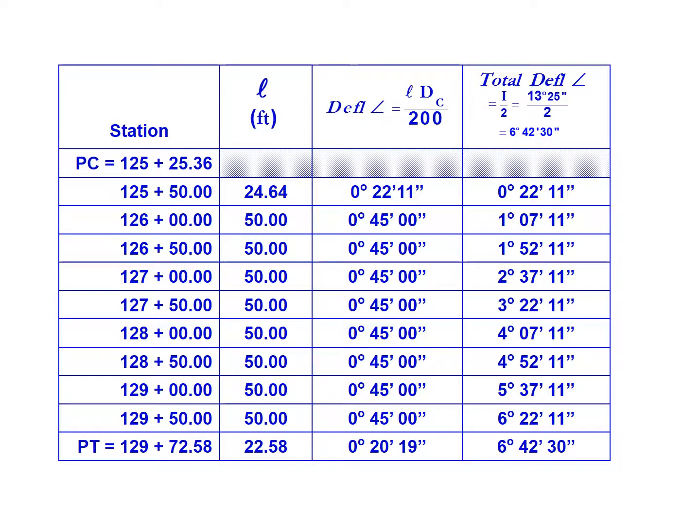The incremental length, the first and last will be something other than 50. All the intermediate ones will be 50 feet. Our first distance from the PC to station 125 plus 50 is 24.64 feet. The remaining will be 50 until we reach our last even increment, the 129 plus 50, and then moving to our PT will give us an incremental length of 22.58.